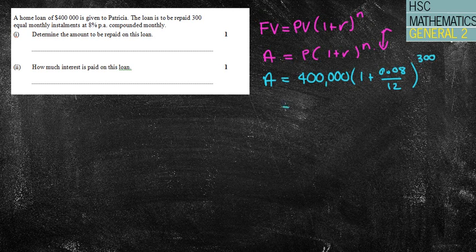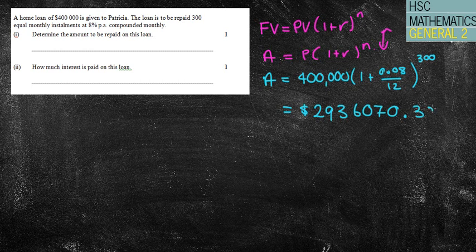Okay, so once we do that, we can now type that into our calculator. Once again, I've mentioned before, please make sure your decimal places are right, make sure you put all the right amount of zeros in—all those little things that cost us those little silly marks. Okay, so we'll do that. We now get 2,936,070.39123. So $2.9 million. Now that's a lot of money to be repaid over the amount of time, isn't it?